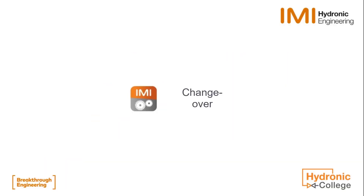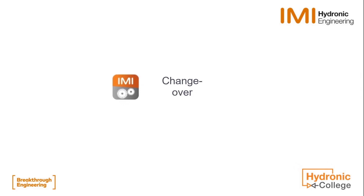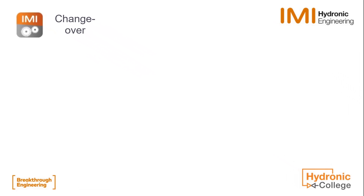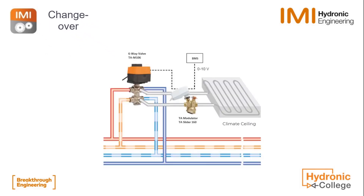In this video, some important information on changeover with TA Slider. Changeover settings can sometimes be complicated. That's why we'll look at some basic information first, and then we'll look at how to set the configuration via Donald and HiTune. The setup we will be discussing is a TA modulator with TA Slider changeover, connected to the actuator for the 6-way valve, a TA M106 changeover. With this setup we can have proportional control on the TA Slider, and the actuator for the 6-way valve will switch to the cooling or heating site, giving us accurate control and a minimum of installation components.